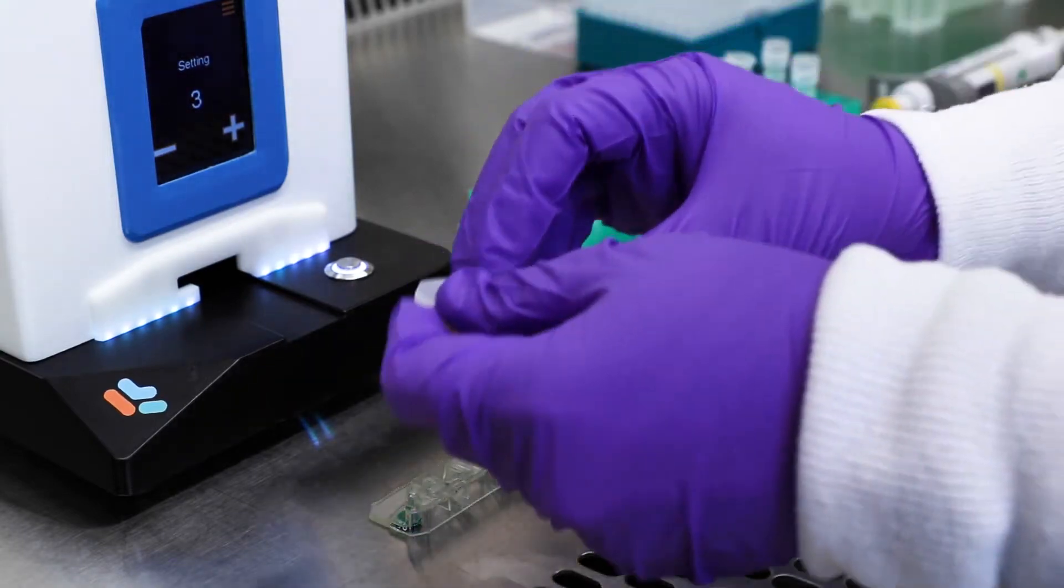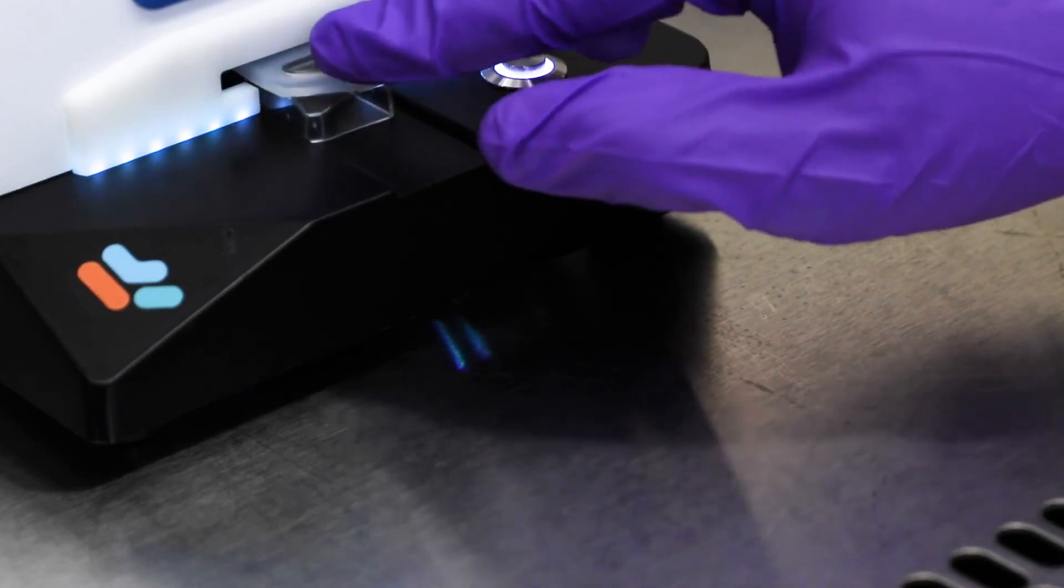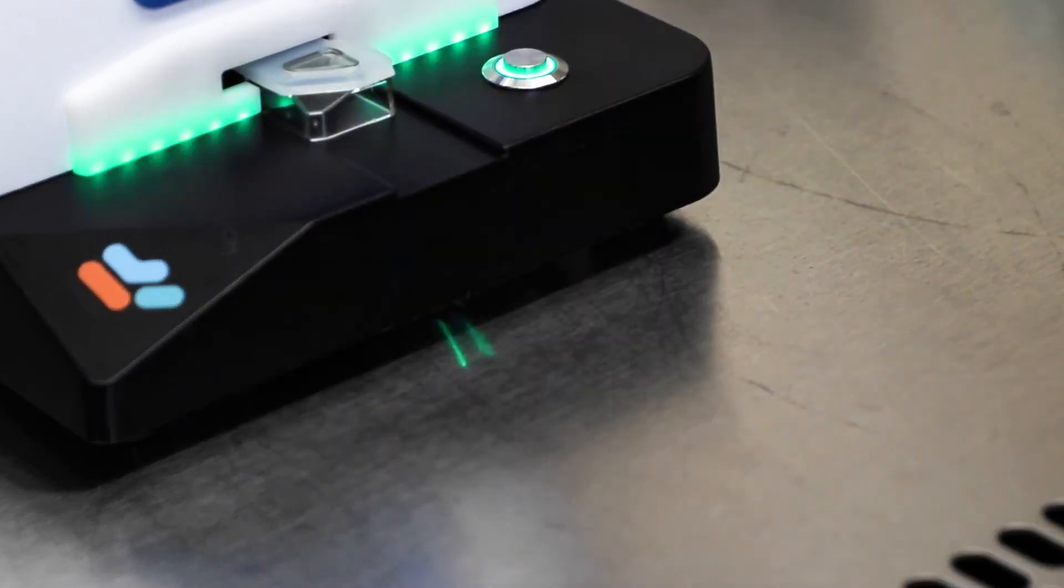Securely place the cap over the Spark cartridge and insert the capped cartridge into the Spark as shown. The status light will illuminate green when successfully inserted.